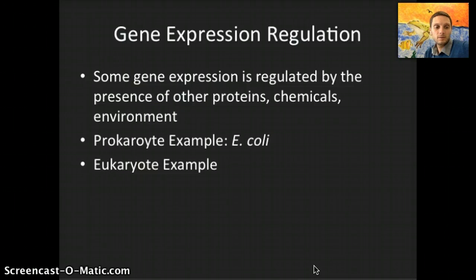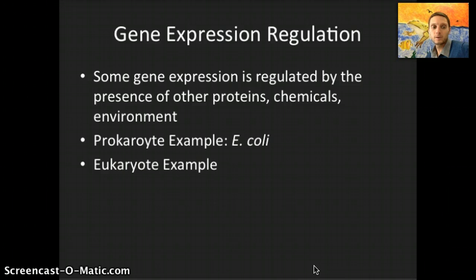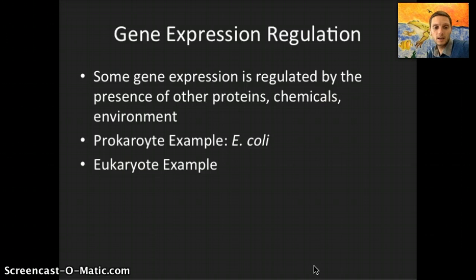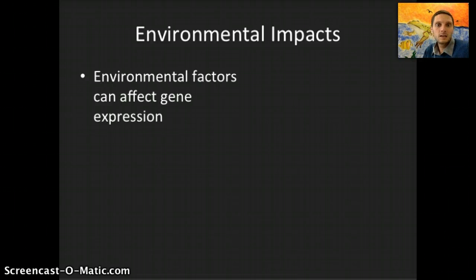In eukaryotes, there can be enhancers and silencers. An enhancer increases the rate of transcription; a silencer decreases it. They may not be directly located near the gene — they might be further up the gene sequence. A promoter is a number of nucleotides that helps initiate transcription: a protein binds to that promoter region, which then initiates or starts the process of transcription.